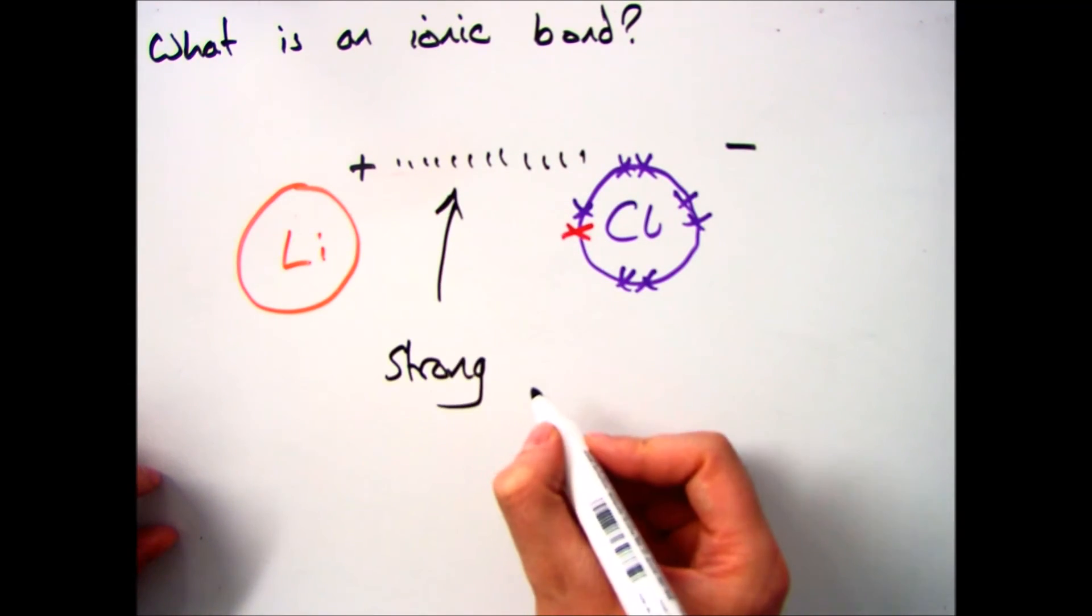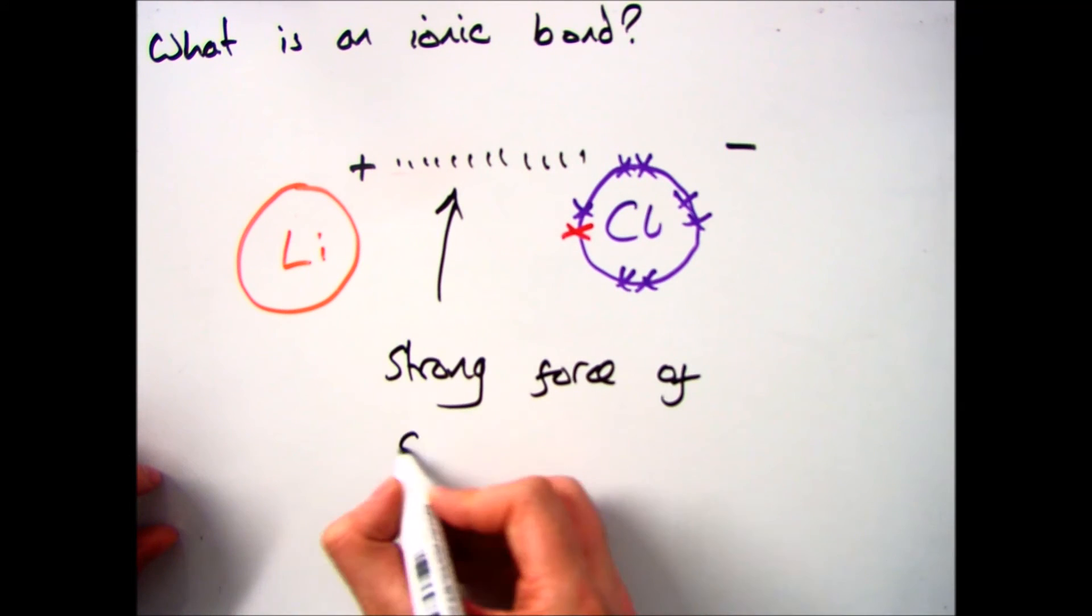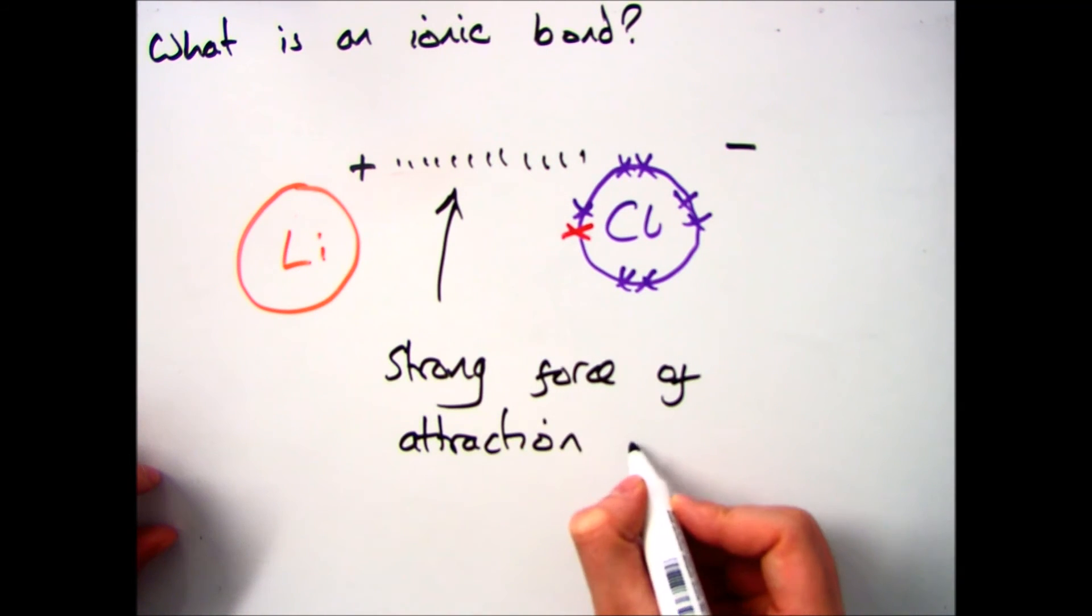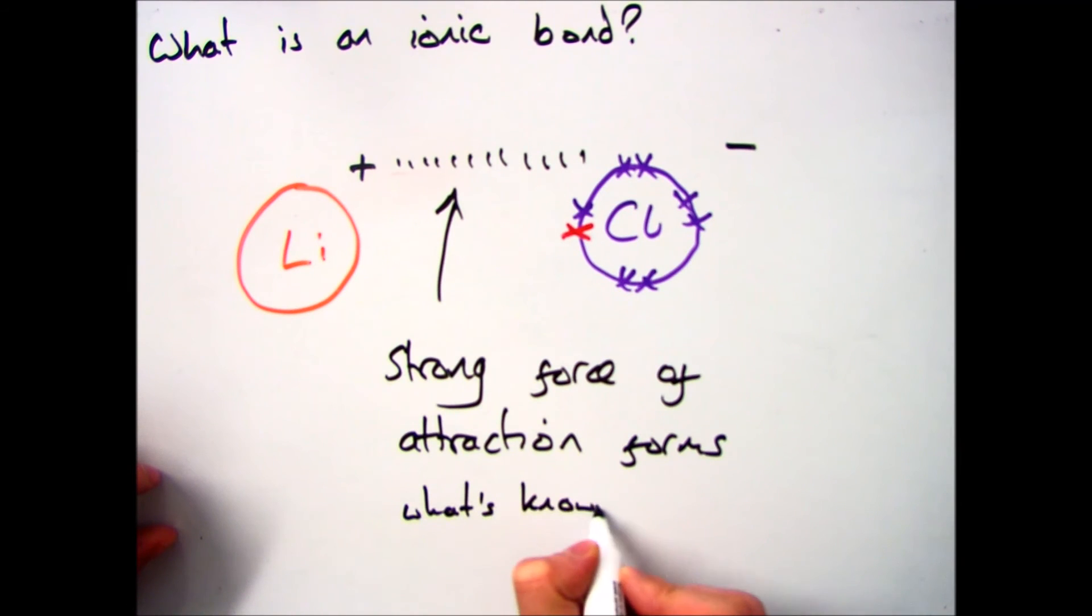Now an ionic bond is a strong force of attraction between those ions. So you have the positive and negative ions, opposites attract, and this forms a strong force of attraction. And that is the definition of what your ionic bond is.